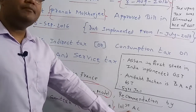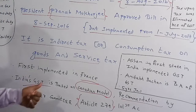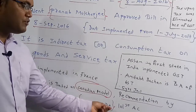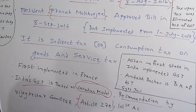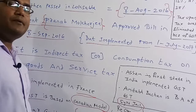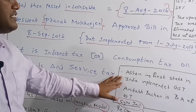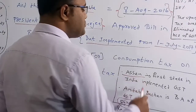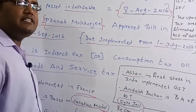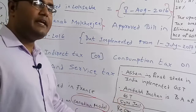India's GST is based on the Canadian model, recommended by the Vijay Kelkar Committee, and implemented via Article 279 under the 101st Amendment Act. If you do not pay GST, you can face five years in jail. Assam is the first state in India to implement GST successfully. The brand ambassador of GST in India is Amitabh Bachchan.